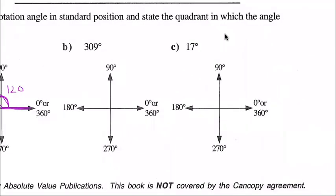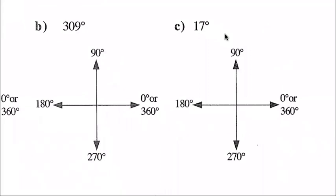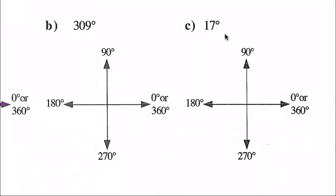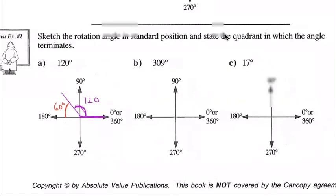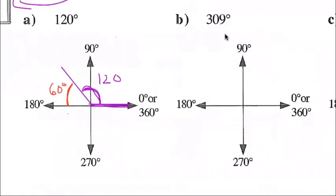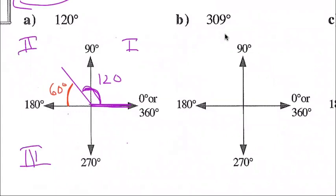This leftover bit to the nearest x-axis is our reference angle — in this case that would be 60 degrees. This angle terminates in quadrant two.